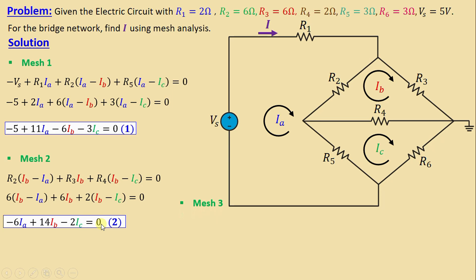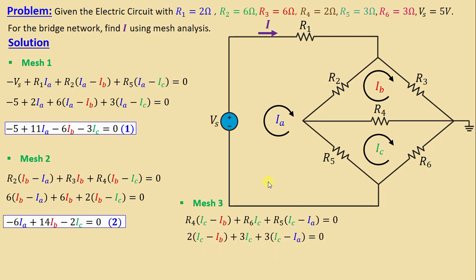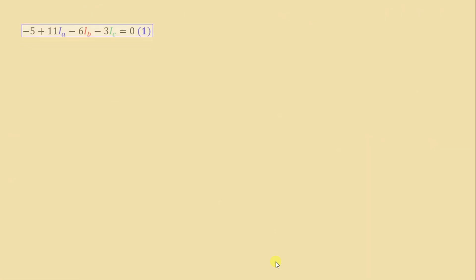We go now to the last mesh, mesh number 3. Applying KVL in mesh 3 we can write: R4·(Ic minus Ib) plus R6·Ic plus R5·(Ic minus Ia) equals zero. Replacing the resistors with their numerical values: 2·(Ic minus Ib) plus 3·Ic plus 3·(Ic minus Ia) equals zero. Simplifying, we obtain: negative 3·Ia minus 2·Ib plus 8·Ic equals zero.